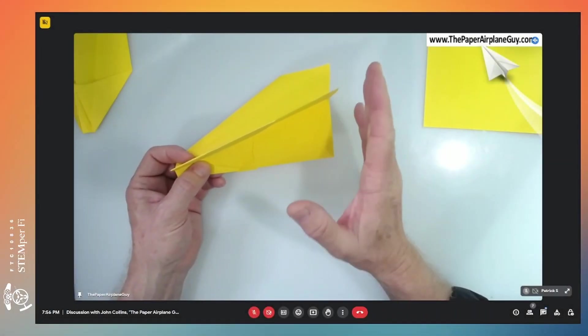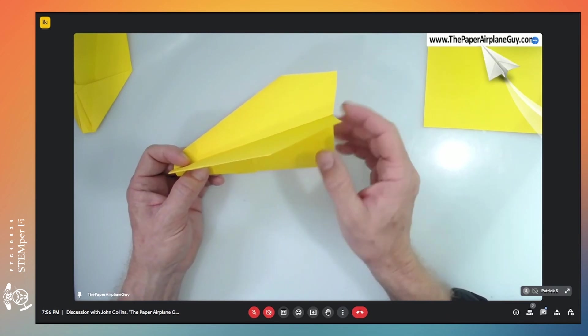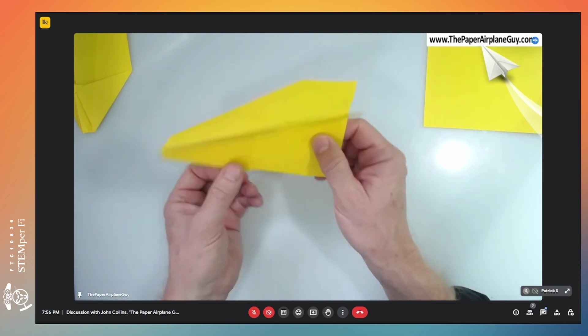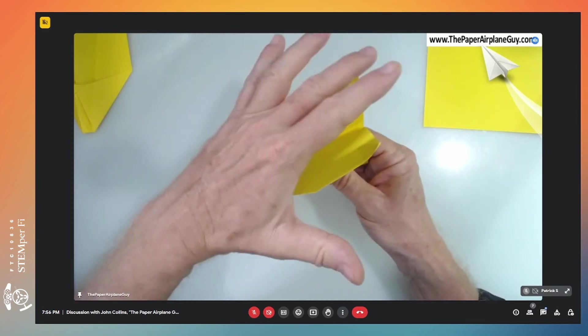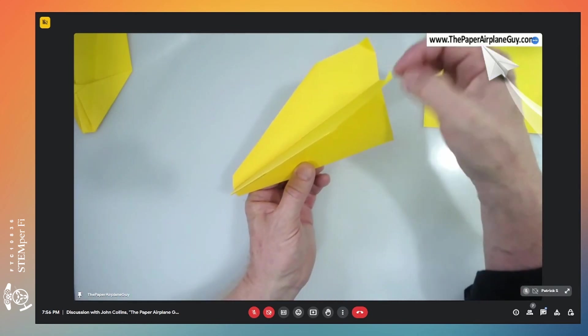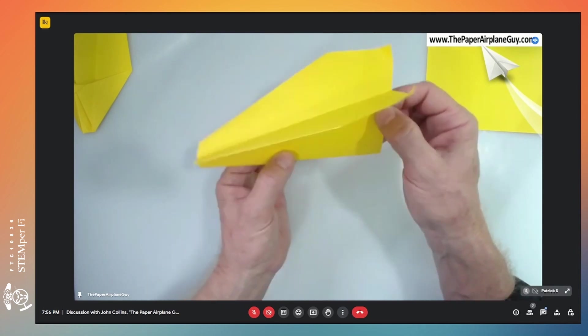The basic idea with paper airplanes is that whatever you do to the tail feathers happens to the nose because it's rotating around that center of gravity. So if I bend this up, air bounces off of those little bends and pushes the tail down and the nose goes up rotating around the center of gravity.